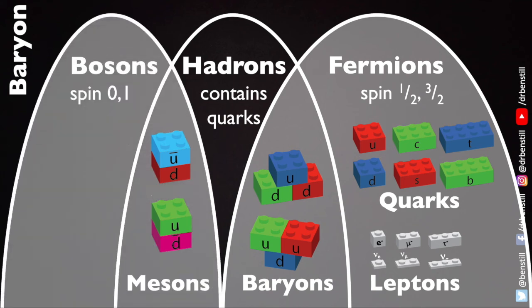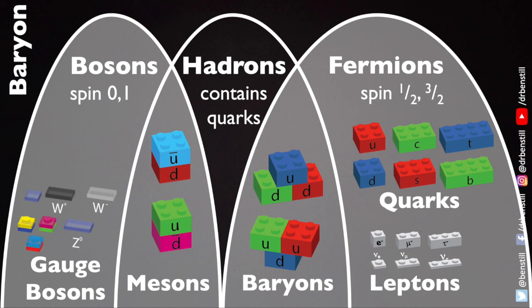Mesons are part of a group of particles called bosons which have an integer spin of naught or one. Other bosons include the gauge bosons or the force carrying particles and the Higgs.